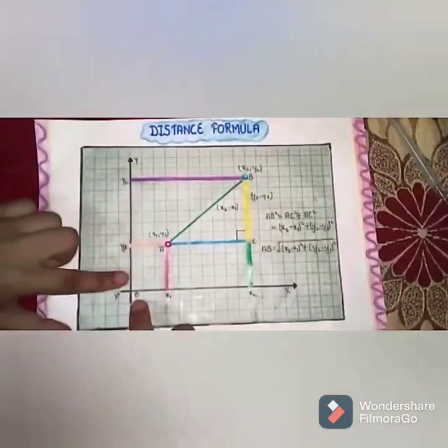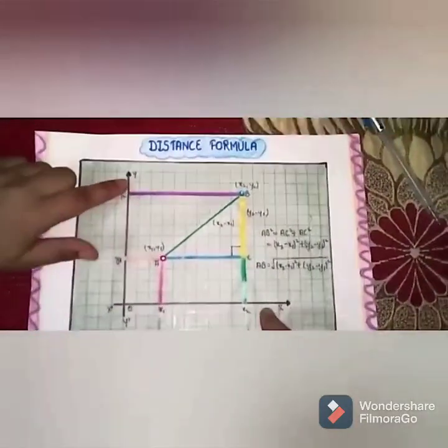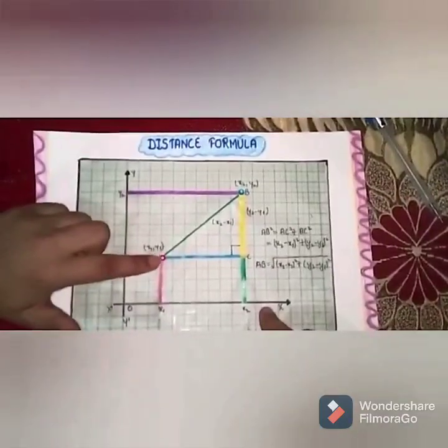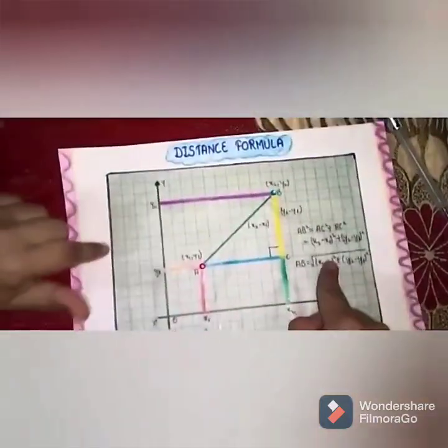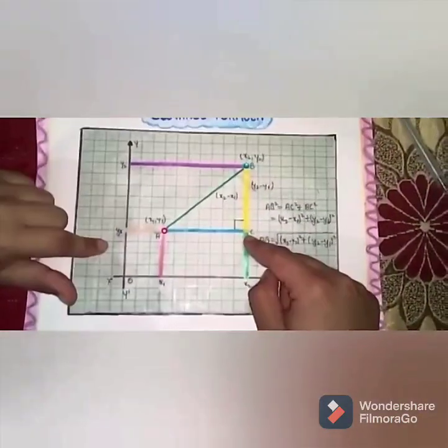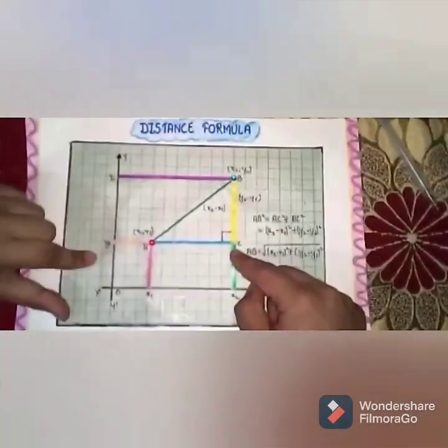So let's start. This is the X-axis and this is the Y-axis. Take two points A and B on the graph and join them to get a line segment AB.